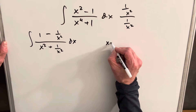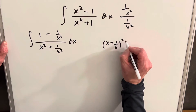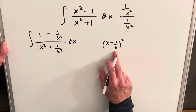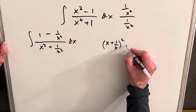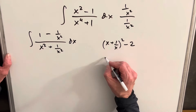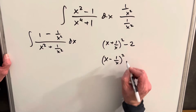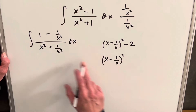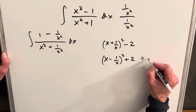Now we want to factor this denominator, and there are actually a couple of ways. We could write it as x plus 1 over x, all squared — when you square that out, you get x squared plus 1 over x squared plus 2. We don't have a 2, so we subtract it off. Very similarly, we could write it as x minus 1 over x, all squared, which gives a negative 2, so we'd add 2 to compensate.